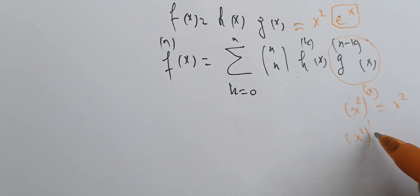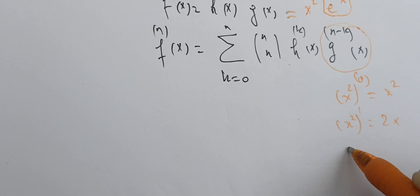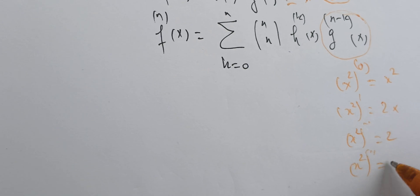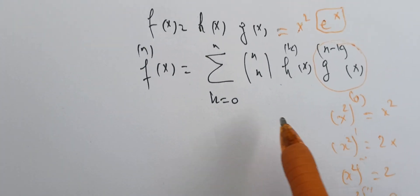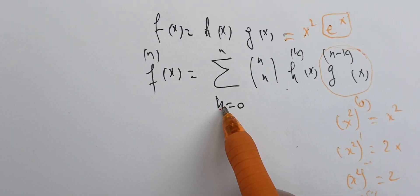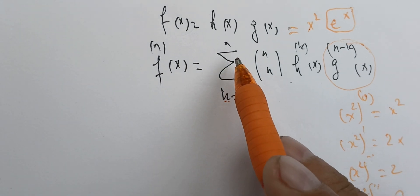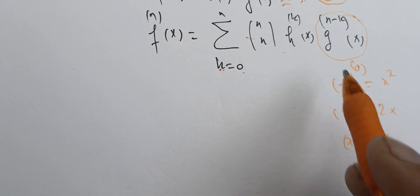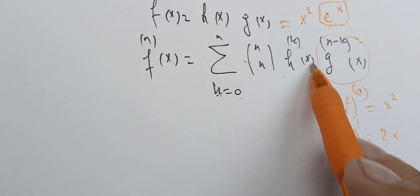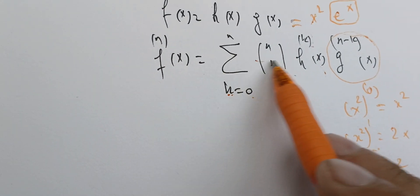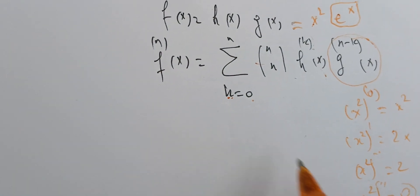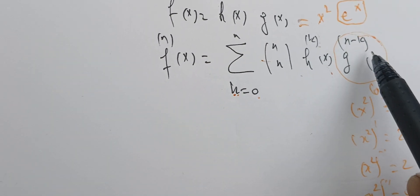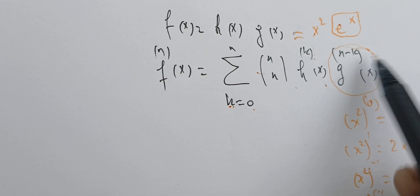If we differentiate x² one time we get 2x, two times we get 2, and three times we get zero. Therefore, for k going from 3 onwards, the derivative of x² will be zero and knock down everything in the sum, so we only need terms up to k = 2.